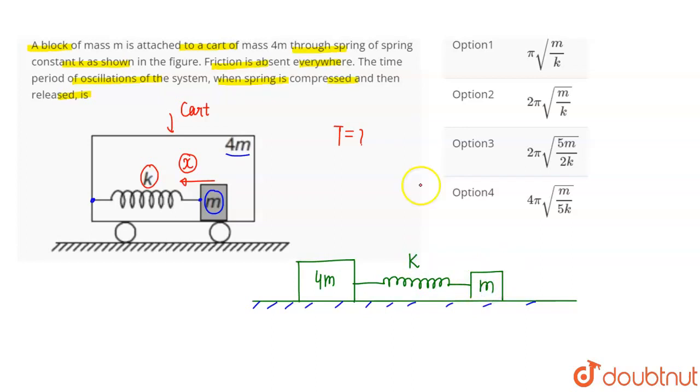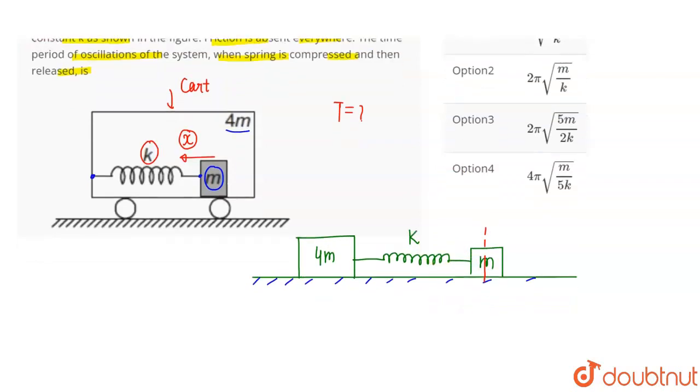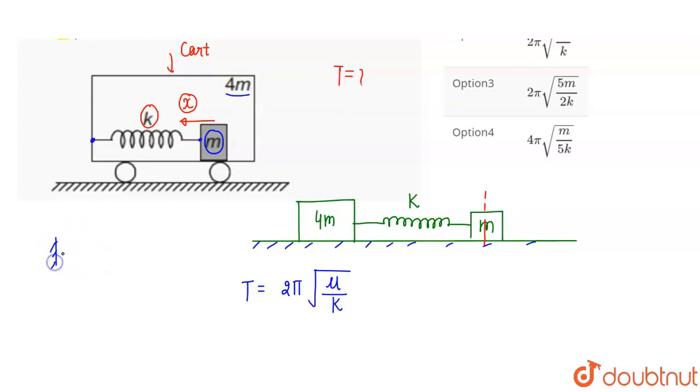Now if we compress this spring and release it, the time period is equal to 2π under root μ divided by K. When we have a spring with blocks connected on both ends, where the mass is the effective mass, the time period T equals 2π under root M by K.